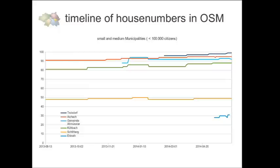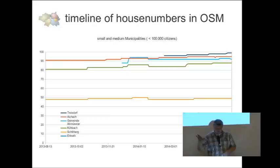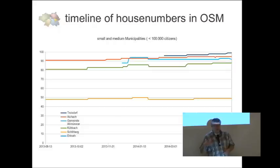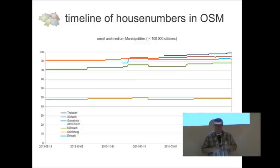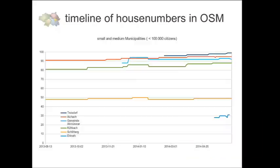For the smaller and medium municipalities with less than 100,000 citizens, I showed the timeline of how we improve house numbers in the municipality. It rises very slowly because mostly it depends on one or two mappers. In bigger cities we have a faster rise.